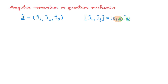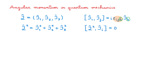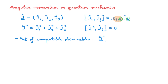As the angular momentum components don't commute, they don't form a set of compatible observables. Instead, we define a new operator j squared, which is equal to j1 squared plus j2 squared plus j3 squared, that commutes with every angular momentum component. Given this result, in the theory of angular momentum, we define as our set of compatible observables the operators j squared and one of the other components, which is conventionally chosen to be j3.